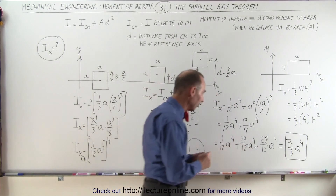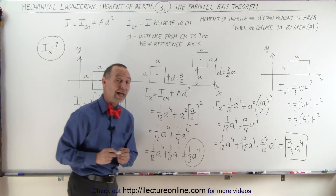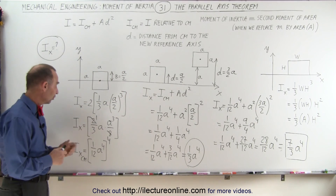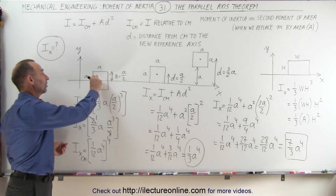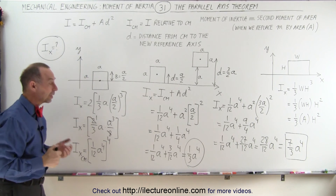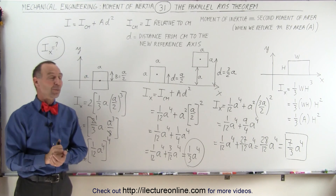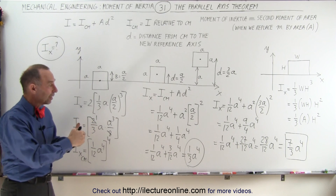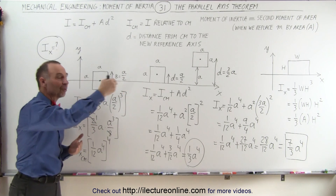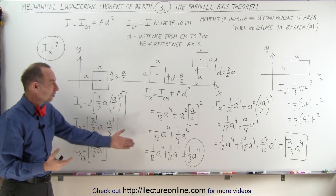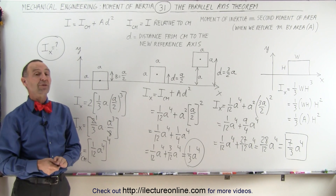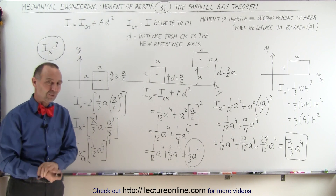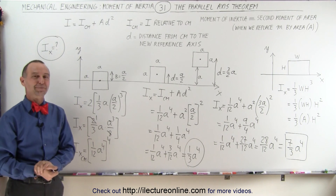Notice how nicely that parallel axis theorem works. Once you know the moment of inertia of an object with the center mass at the origin, we can then find the moment of inertia of the very same object displaced from that location by any amount in any direction, and we can easily find the moment of inertia of that situation. And that's how it's done. Thank you.